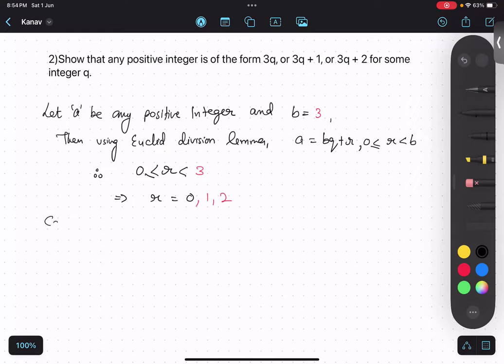So, case 1. If r equals to 0. Then a value would be a equals to 3q plus 0. Therefore, a equals to 3q.